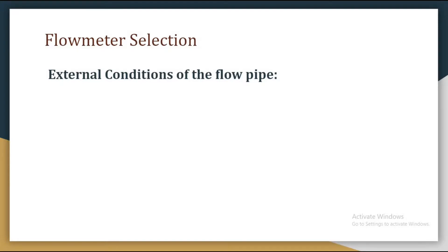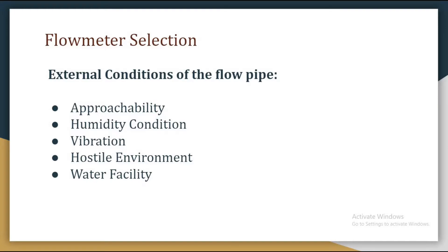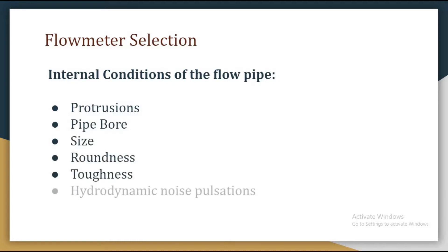The next thing is external conditions of the flow pipe. The first is approachability — it is important to know whether, once the meter is installed, it is accessible for removal or recalibration. We also need to be familiar with humidity conditions, vibration, hostile environment, water facility, etc. Internal conditions of the flow pipe include protrusions, pipe bore size, roundness, roughness, hydrodynamic noise, and pulsations.